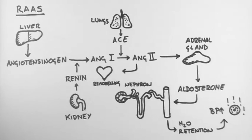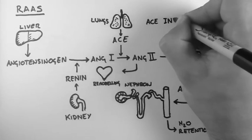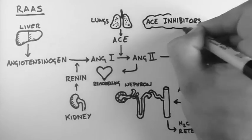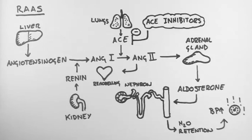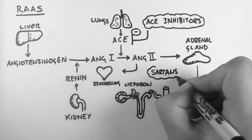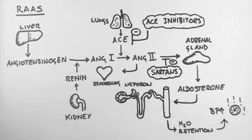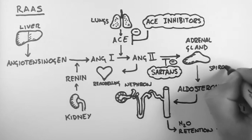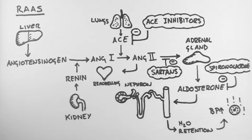There are drugs which we can use to affect this pathway. The most common are the ACE inhibitors — angiotensin converting enzyme inhibitors — which obviously inhibit ACE. The next group are called sartans, or angiotensin 2 receptor blockers, also known as ARBs, and they stop the effects of angiotensin 2. A third set of drugs block the action of aldosterone, and the most important of these is spironolactone.